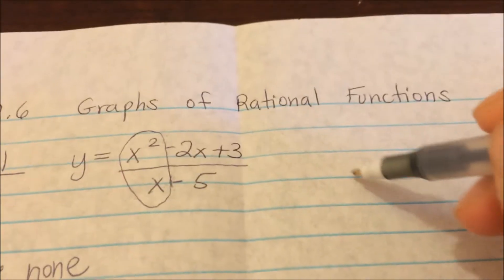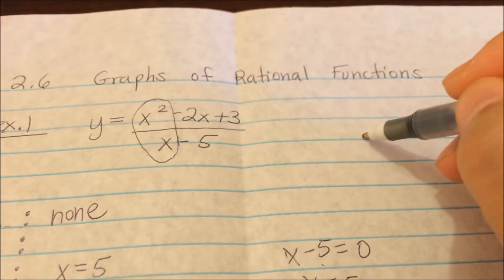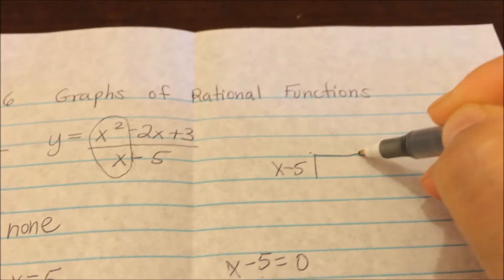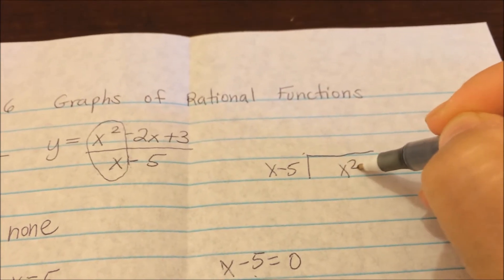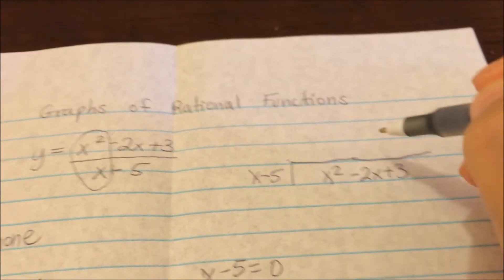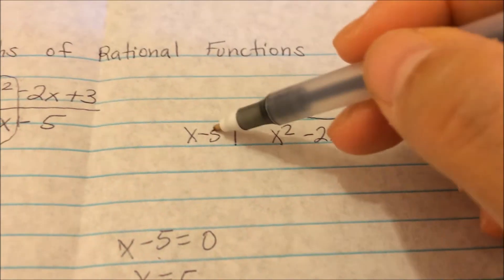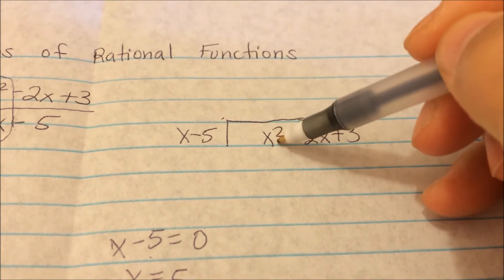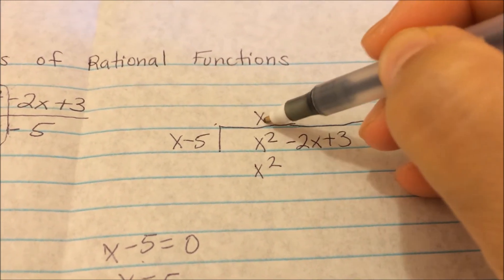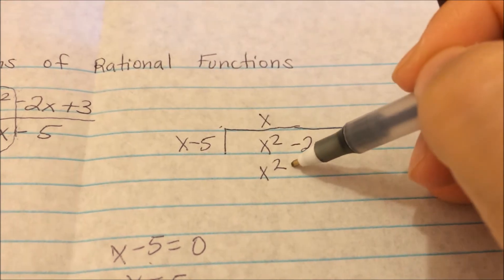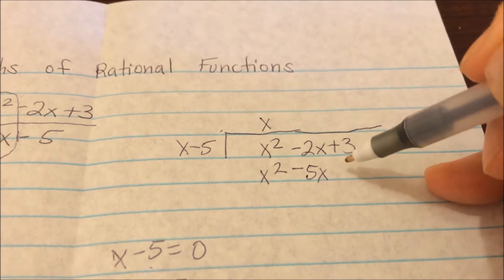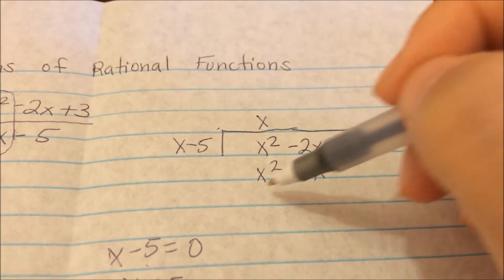I'm going to do long division to figure out what the slant asymptote is. So x minus 5 goes on the outside, and we have x squared minus 2x plus 3 on the inside. From here, x times something has to give us x squared, so that's x. Then x times negative 5 gives me negative 5x, which goes underneath the x term — make sure it's lined up underneath the correct term.